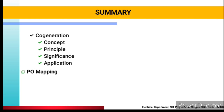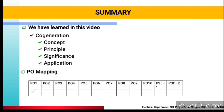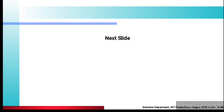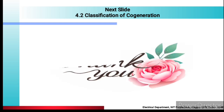In summary, you have learned about co-generation — its concept, principle, significance and application — and PO mapping: PO 1, 2, 3, 10 and PSO 1. The next video will be on the classification of co-generation. Thank you and keep learning.